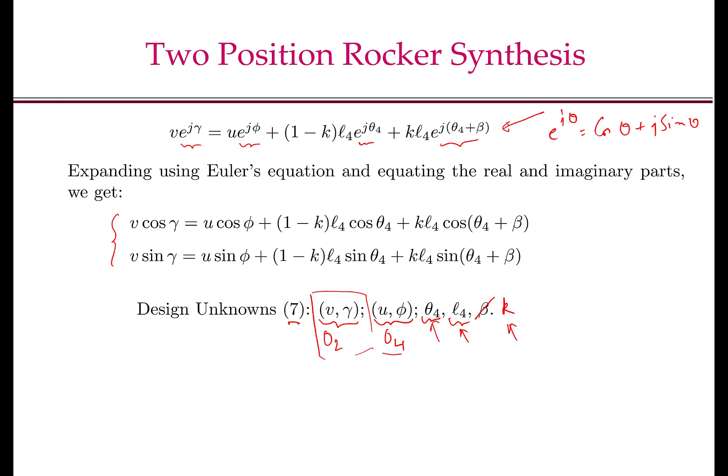So let us understand in terms of these equations here. If you choose U, phi, theta 4, L4, K, and beta is known, you can see that the right hand side of these equations, of both these equations, becomes determined. So you can clearly find V cos gamma and V sin gamma. That means you can find V square and add the two right hand sides and take a square root, you will get V. And then you can use the atan2 function to get gamma. So you can get O2.